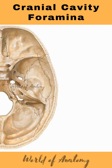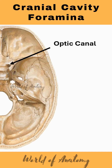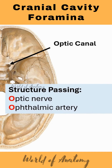Today we are going to discuss the foramina of the cranial cavity. We will discuss the major foramina. Number one is the optic canal — structures passing through the optic canal are the optic nerve and the ophthalmic artery.